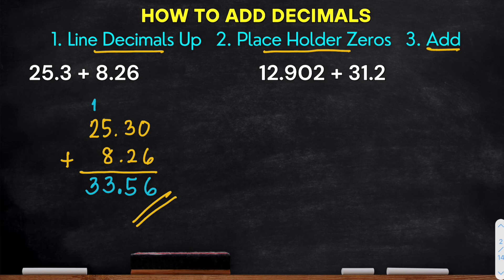So let's proceed to our second problem. We have 12.902 plus 31.2. So applying the same steps. So our first step, line decimals up. So that is 12.902 plus 31.2. So again, when we place the decimal point, make sure they are aligned. So that is 31.2. Got it?